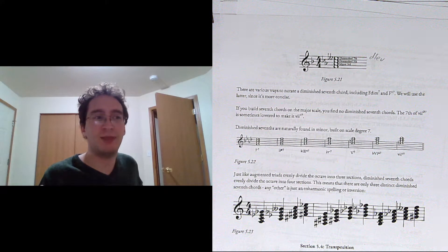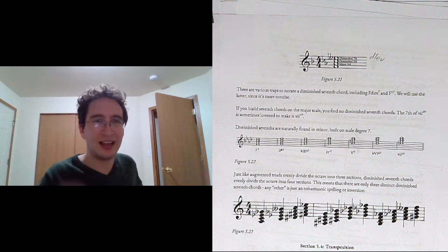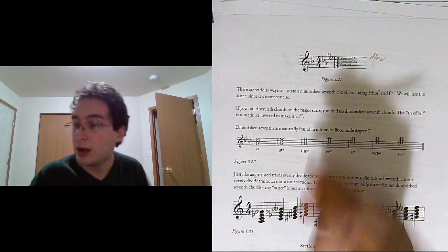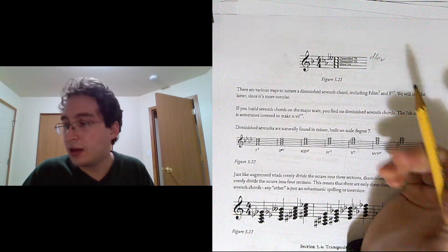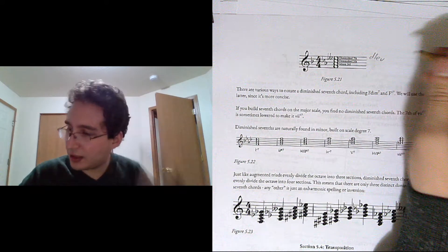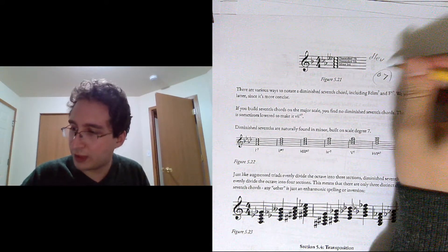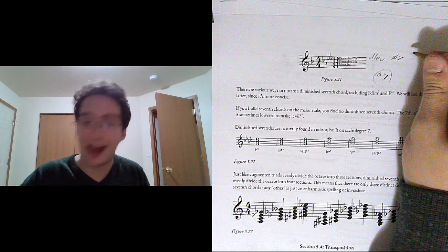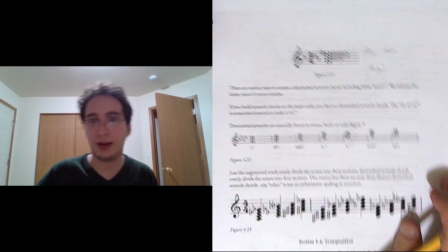Usually when you get to diminished 7ths, the scale degrees get a little wonky anyway in the immediate vicinity. So there are various ways to notate. We're going to go with fully diminished 7 to go along with the half diminished 7th symbol we used in the previous lesson.